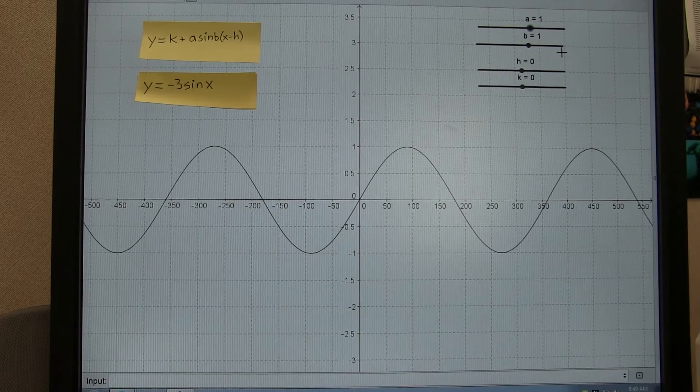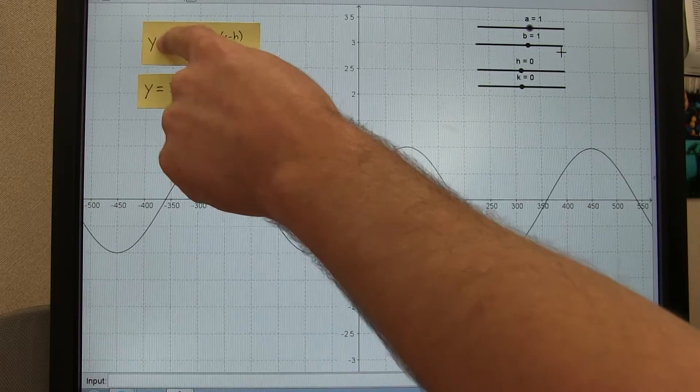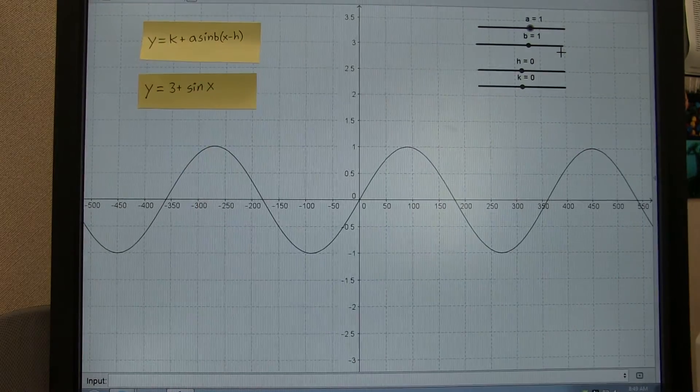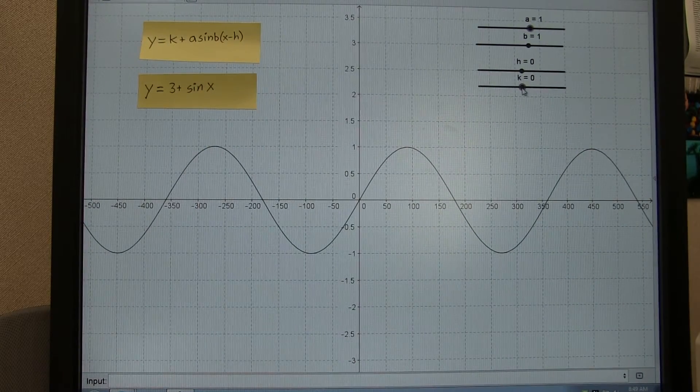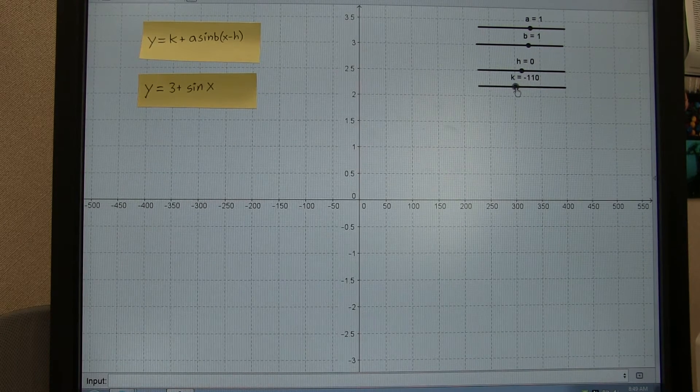Let's add a constant K now. Here's K. What happens if we change K? Right now, K is set to 0. We'll increase K. Oh, we increased K way too much.